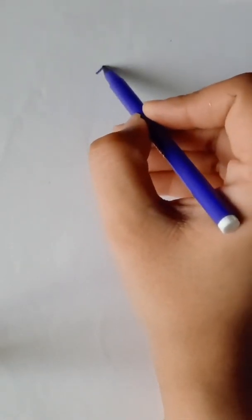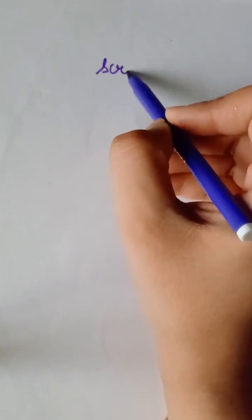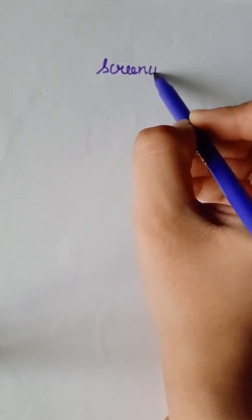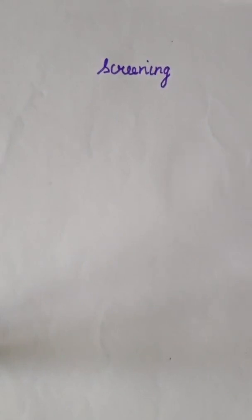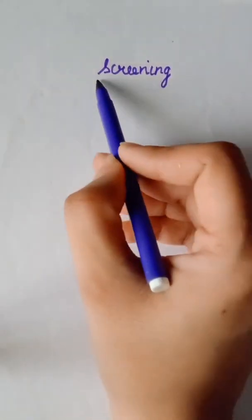Today we are going to discuss the topic: screening of recombinants. Screening is also known as selection. So identification, selection, or screening of recombinants — after the introduction of recombinant DNA into suitable host cells, it is essential to identify those cells which have received the recombinant DNA molecule. This process is known as screening.